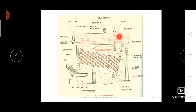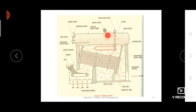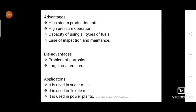The steam collected at the top surface of the water is passed through the superheater tube, which converts the saturated steam into superheated steam. The superheated steam is then sent to the turbine using the steam stop valve. This completes the working of the Babcock and Wilcox boiler.